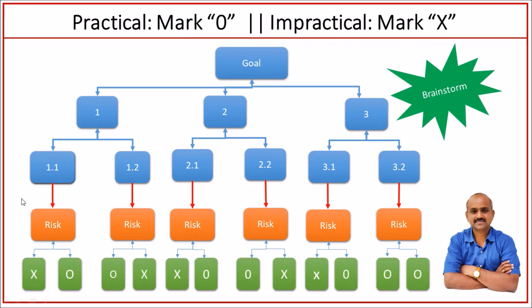Decide how practical each countermeasure action is. We will use the letters X and O. We mark X for actions that are practically not feasible or viable when weighed against the criteria of cost, time required, ease of implementation, and effectiveness. The tasks labeled O are practically viable actions to mitigate the risks identified at the fourth level.